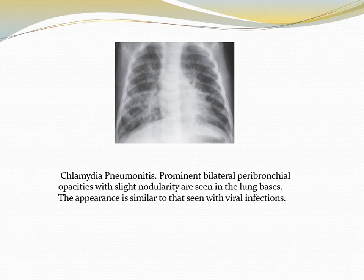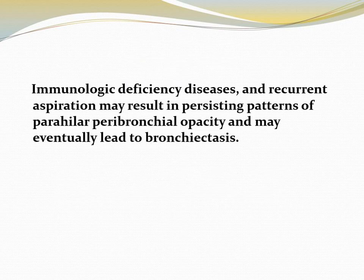Immunologic deficiency disease and recurrent aspiration may result in a persisting pattern of perihilar peribronchial opacity and may eventually lead to bronchiectasis.